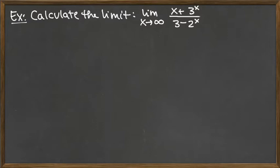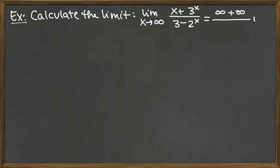We first just try to plug in and see what happens. On the top, as X goes to infinity, X plus 3 to the X is an exponential growth function because the base B is 3, and 3 is bigger than 1, so that is going to be exponential growth. As X goes out to infinity, the function grows exponentially, so it's going to go to positive infinity. So on the top overall, we've got positive infinity.